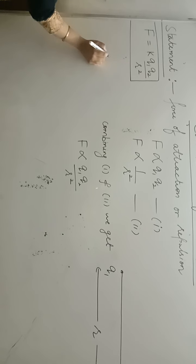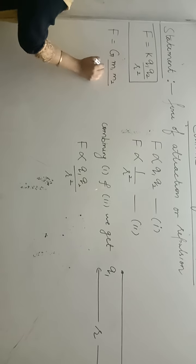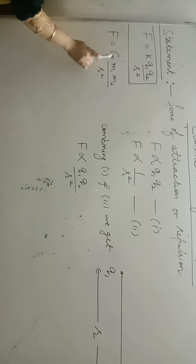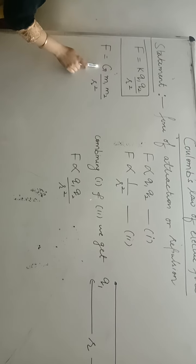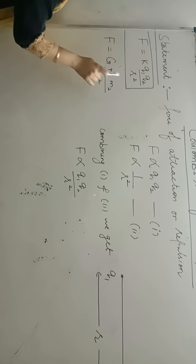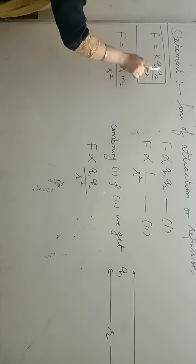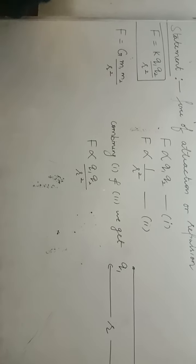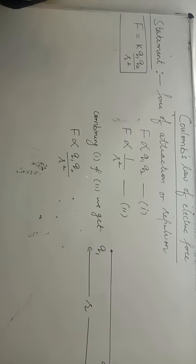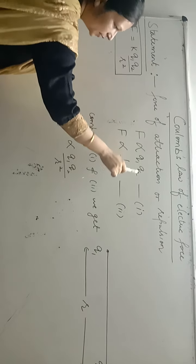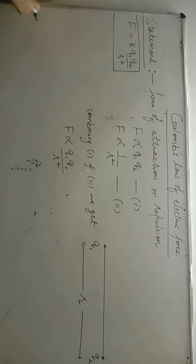This is analogous to Newton's Law of Gravitation, where F is equal to G M1 M2 upon R square. Similarly, for Coulomb's Law, F is equal to K Q1 Q2 upon R square — where K is the electrostatic force constant, playing the same role as G in gravitation.